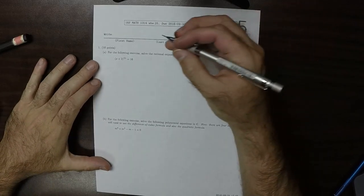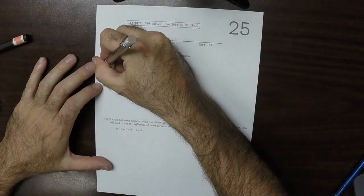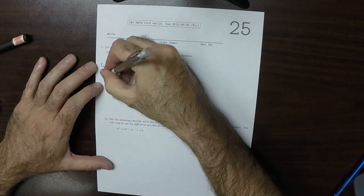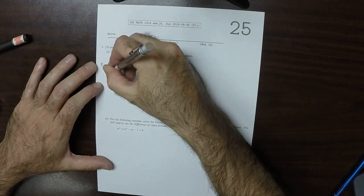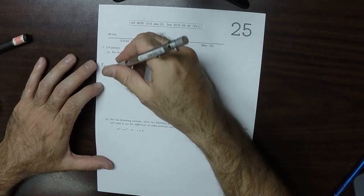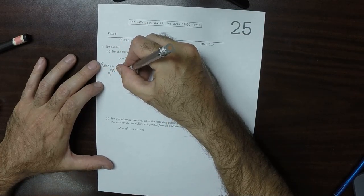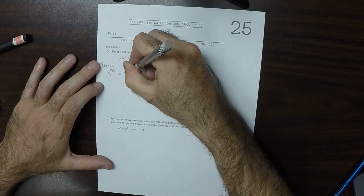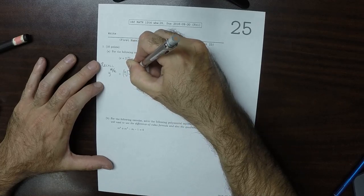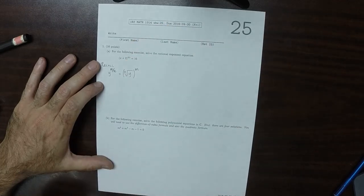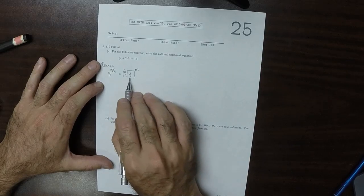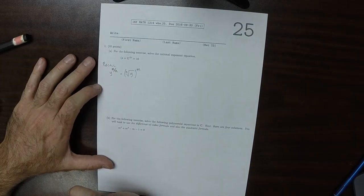Recall that y to exponent m over n is by definition the nth root of y, and then you raise this to exponent m. Importantly, the denominator has to occur first. That is to say, the radical has to occur first.